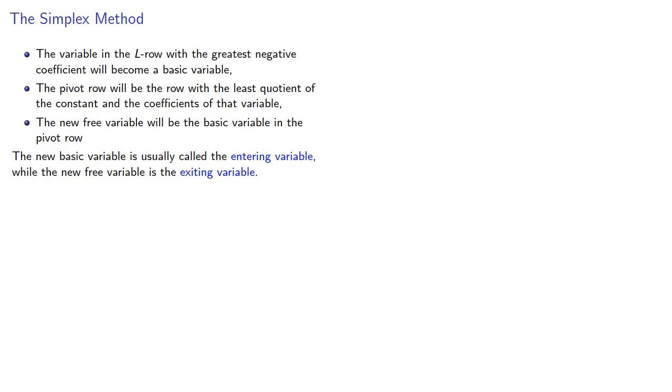Row reducing using the pivot gives us a new tableau, then lather, rinse, repeat. The algorithm ends when all coefficients of the L row are non-negative.